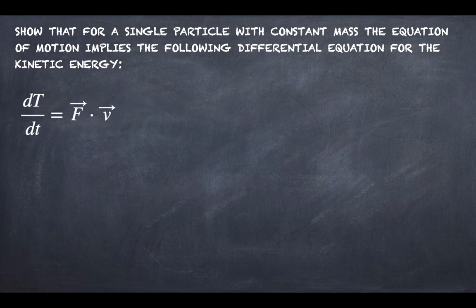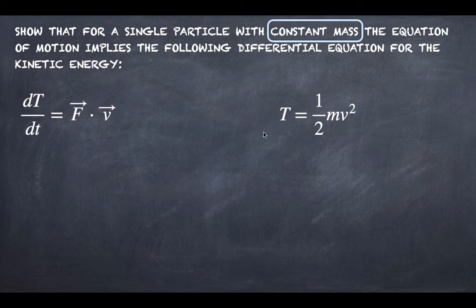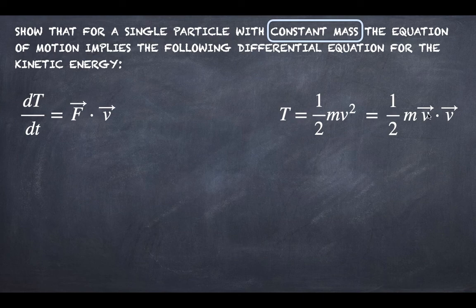Let's solve the first part. We are in the scenario with constant mass and the kinetic energy is defined as (1/2)mv². Since the right-hand side of the equation has a scalar product, let's write the kinetic energy as a scalar product as well: (1/2)m times v·v.